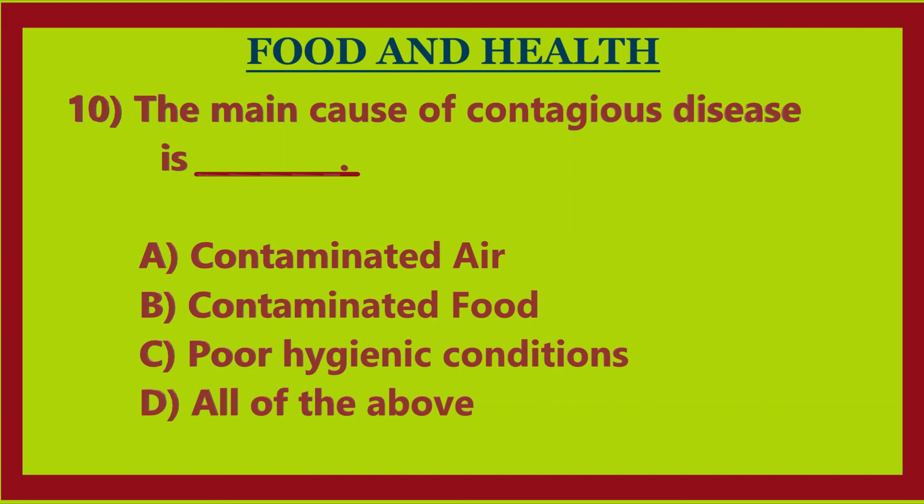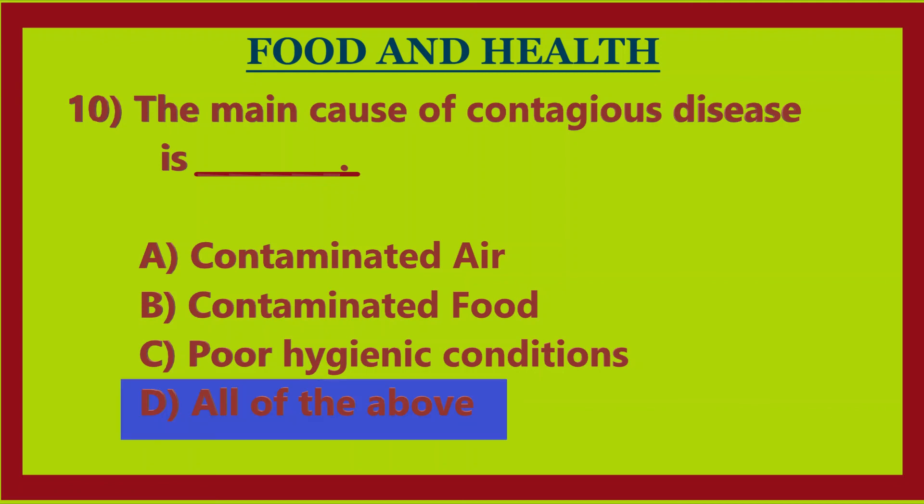Tenth question: the main cause of contagious disease is — option A: contaminated air, option B: contaminated food, option C: poor hygienic conditions, option D: all of the above. Answer: option D, all of the above. Bye guys, thanks for watching. Don't forget to subscribe and like this video. Bye bye!